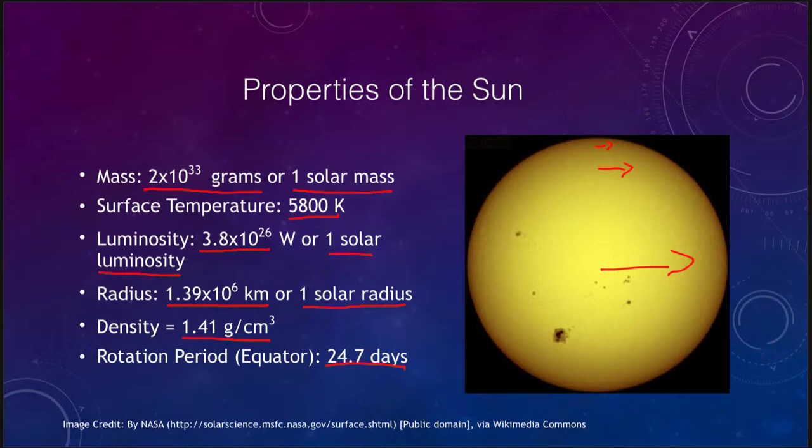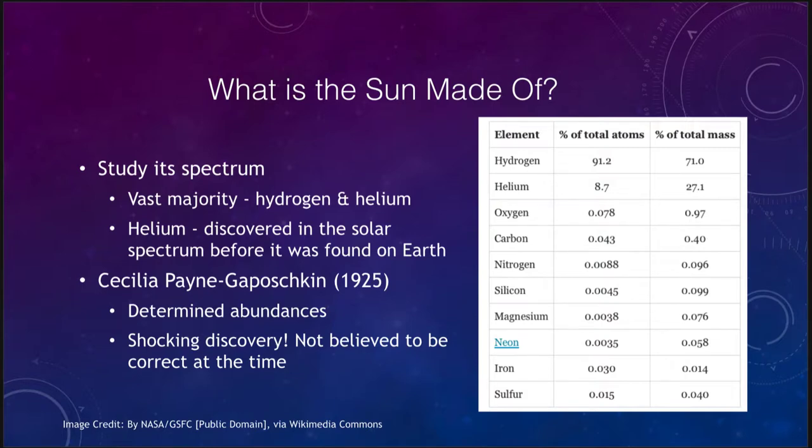So what is the Sun made up of? Let's take a look here and we find that we can determine what the Sun is made up of by studying its spectrum. We find that the majority of this is hydrogen and helium. Now depending on whether you look by the total number of atoms or the mass, either way you get a large proportion of it being hydrogen and helium. By number of atoms it's 99.9% if you add these two together.